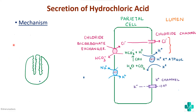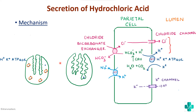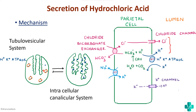In a resting parietal cell, there are many canaliculi and the H+/K+ ATPase pump is in a resting state within vesicles. Once the parietal cell is stimulated to produce HCL, it changes shape: the canaliculi deepen and the H+/K+ ATPase pump is pushed out onto the surface membrane. This is the tubular vesicular system and intracellular canalicular system of the parietal cell.